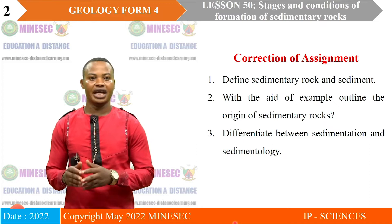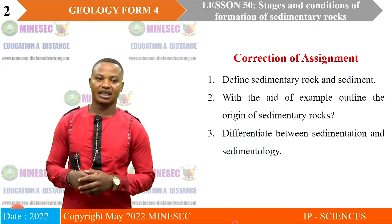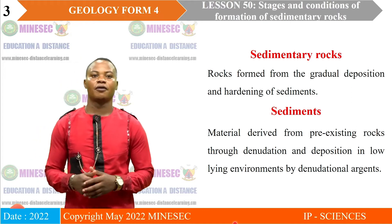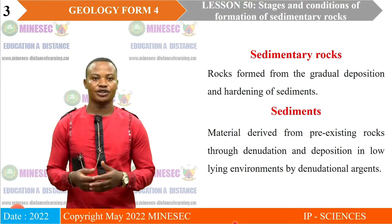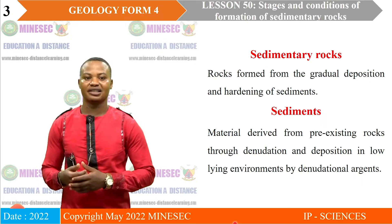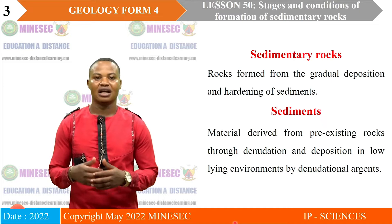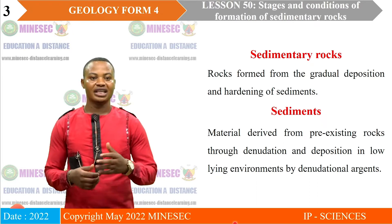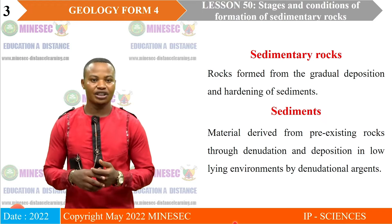We start with the first one. Sedimentary rocks are rocks formed from gradual deposition and hardening of sediment, or rocks formed from the compaction and cementation of loose sediments. Sediments are materials derived from pre-existing rocks through denudation and deposition in low-lying environments by denudational agents like water, wind, glacier, and gravity. Sediments are formed through weathering, erosion, transportation, and deposition.